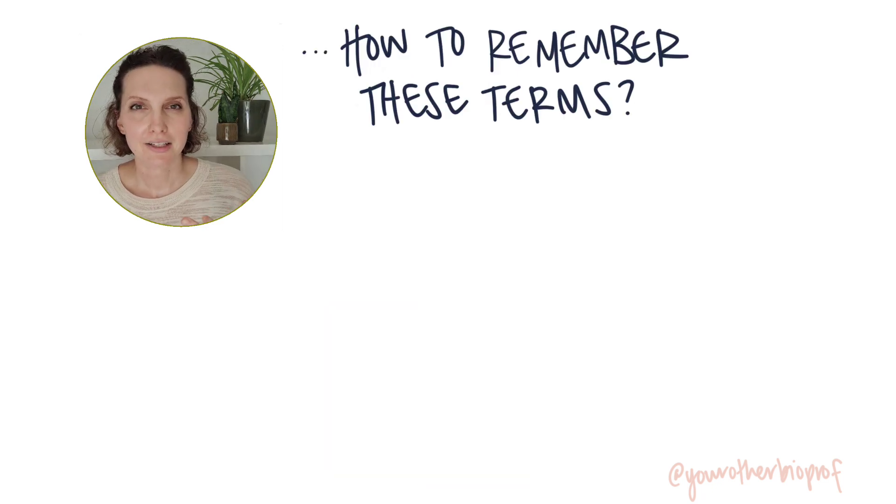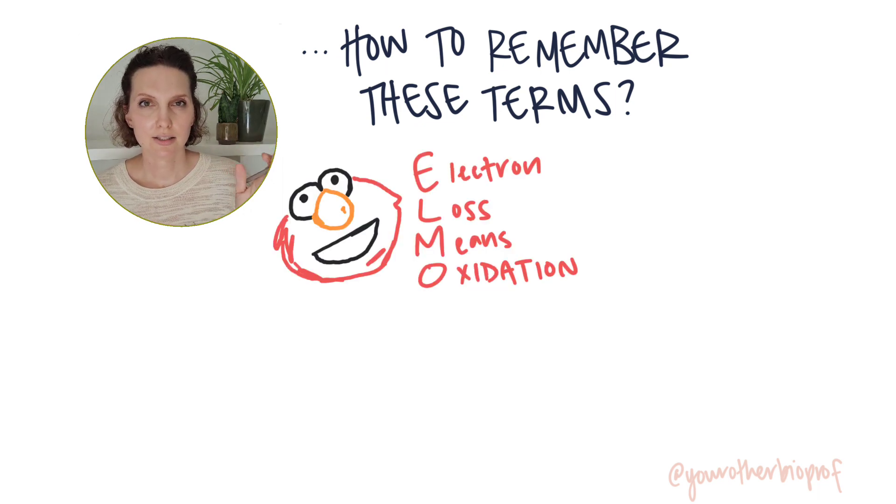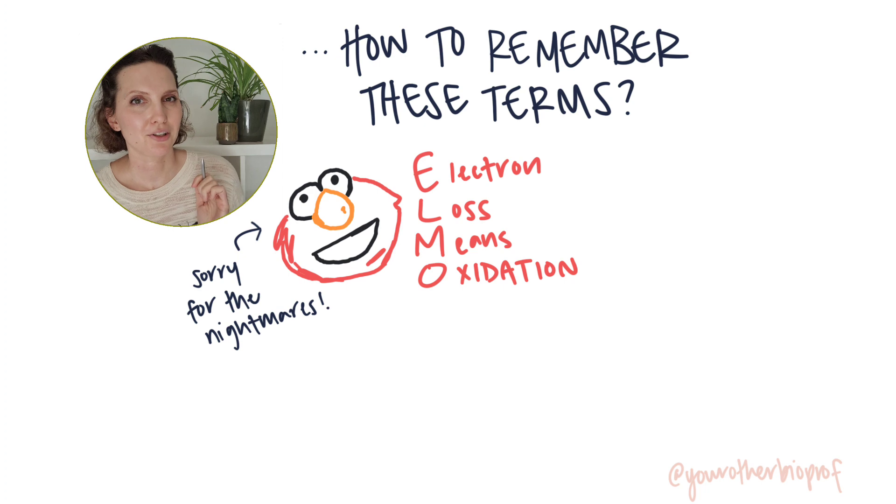So normally, I save my memory tips and stuff for the end, but we're going to do them right now so that you can keep them in mind as we do a little bit of practice. Let's start with a happy little red muppet. Elmo. Electron loss means oxidation.